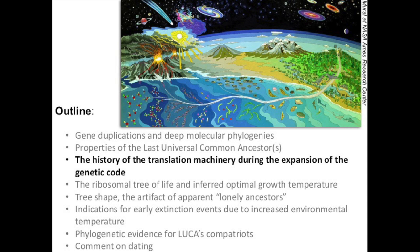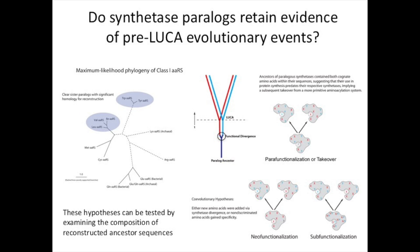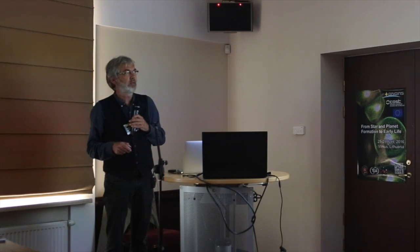Early gene duplications are really cool because they let us look further back in time — before the last universal common ancestor. A great example are the aminoacyl-tRNA synthetases: enzymes that attach an amino acid to a tRNA, which then goes to the ribosome to translate messenger RNA into protein. There are two classes of aminoacyl-tRNA synthetases, and within each class these enzymes are clearly homologous. In the phylogeny of class 1, the valyl and isoleucyl aminoacyl-tRNA synthetases appear closely related, but their divergence certainly happened before the last universal common ancestor, since all living organisms have both enzymes.